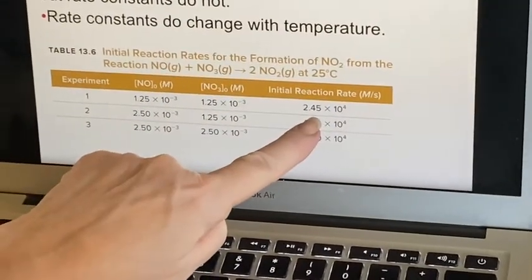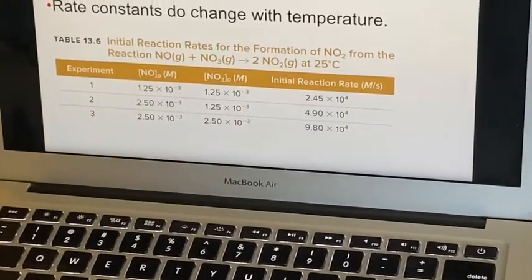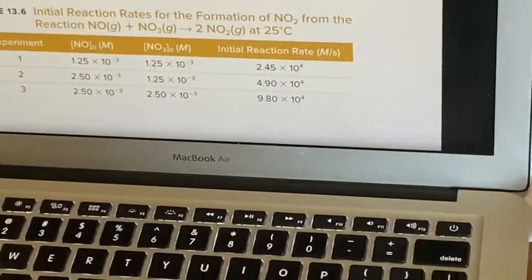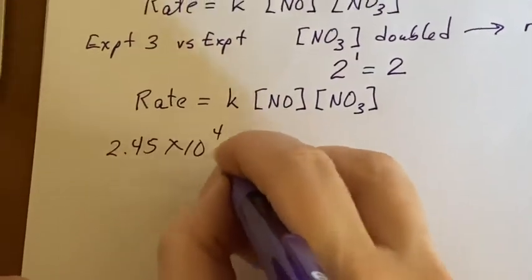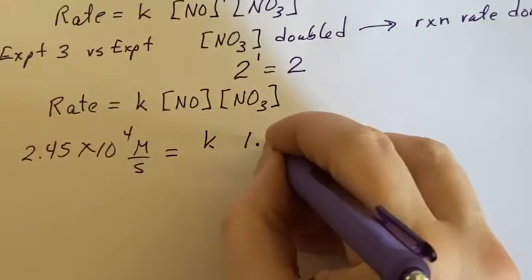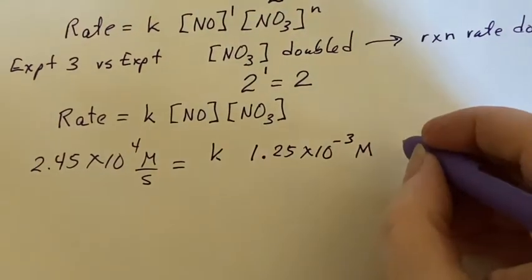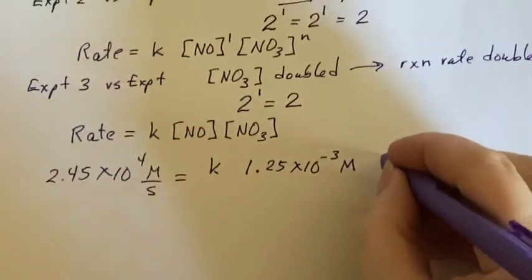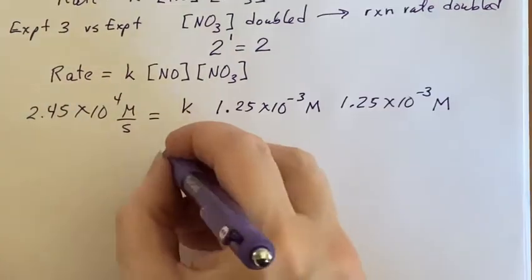I can use any one of these three experiments to figure out what K is now, because in each case I can refer to these giving me that, or these will give me this. So I can use any of the three. Let me just use the first one. I've been told what the rate is: 2.45 times 10 to the fourth molarity per second equals K times the concentration of NO, 1.25 times 10 to the negative third molar, times the concentration of NO₃, also 1.25 times 10 to the negative third molar.